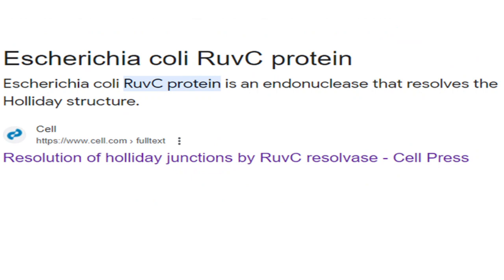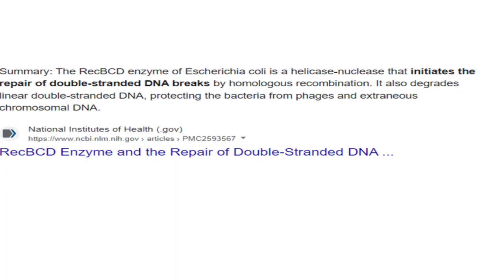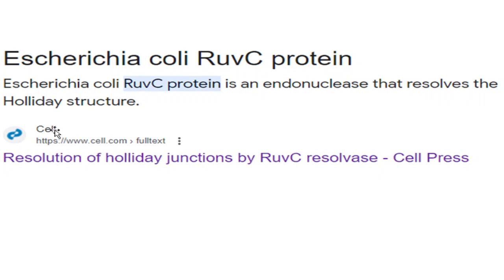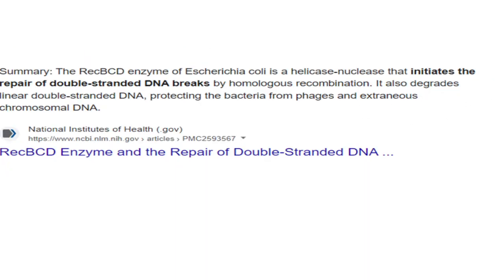The next question concerns recombination: which protein is important in resolving the Holliday junction structure? The correct answer is RuvC, which is an endonuclease. Many students mention the RecBCD enzyme, which is also present in E. coli and functions as both a helicase and nuclease, initiating repair of double-strand breaks by homologous recombination. However, the protein specifically involved in resolving the Holliday junction is RuvC.